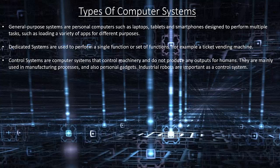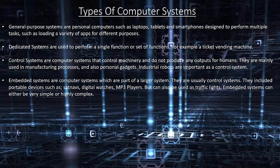Control systems are mainly used in manufacturing processes and also personal gadgets. Industrial robots are important as control systems. Embedded systems are computer systems which are part of a larger system; they are usually controlled systems. They include portable devices such as sat-navs, digital watches, and MP3 players, but can also be used as traffic lights. Embedded systems can either be very simple or highly complex.